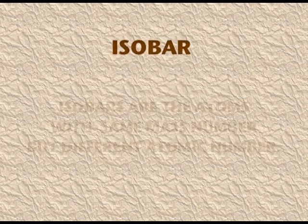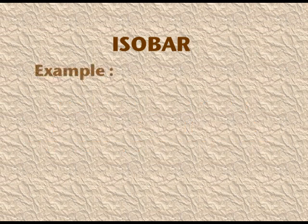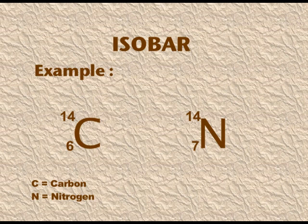Isobars: these are atoms with the same mass number but different atomic numbers. For example, ₆C¹⁴ and ₇N¹⁴ — carbon and nitrogen are two different elements with different atomic numbers (6 and 7 respectively), but both have the same mass number of 14.